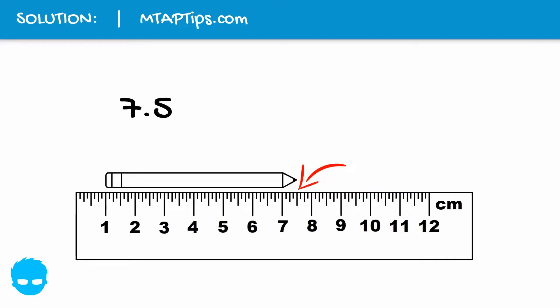But take note that when we are measuring something, we should always start from 0. And take a closer look at this pencil. It started from 1.